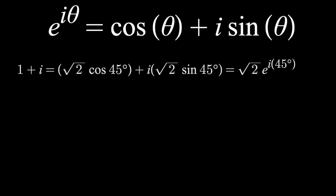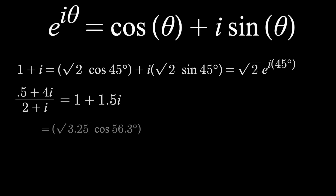Even if that complex number looks complicated, it can still be simplified to some a plus bi. Then with just some basic trig, we find in this case the real component 1 equals root 3.25 cosine of 56.3 degrees, while the imaginary component equals root 3.25 sine of 56.3 degrees. And now that we have the correct format — same coefficient and same argument — we can write this in exponential form.